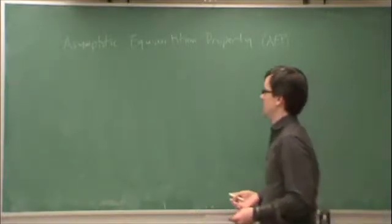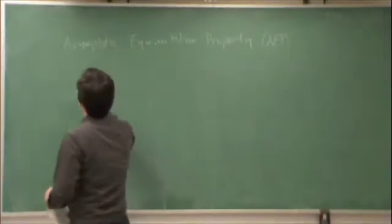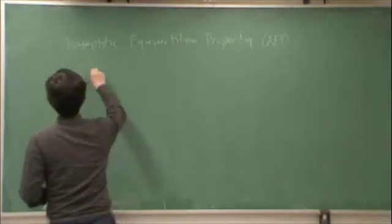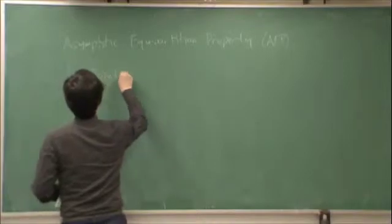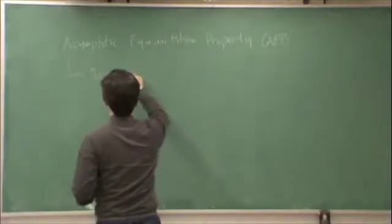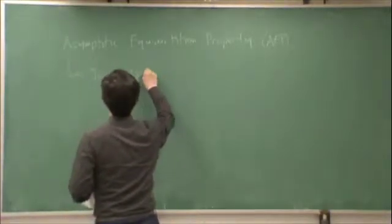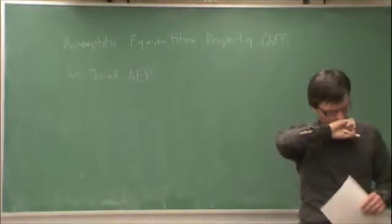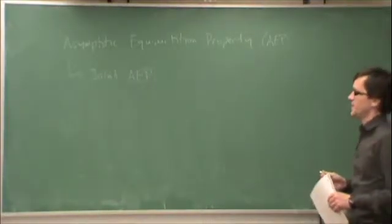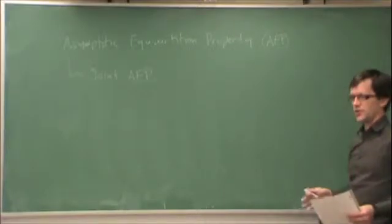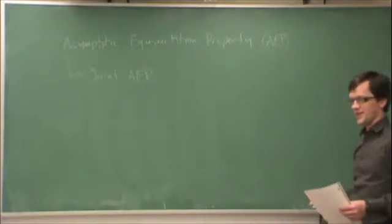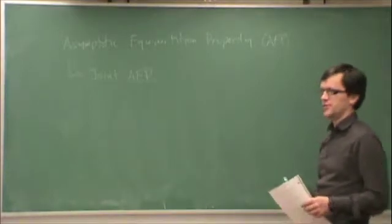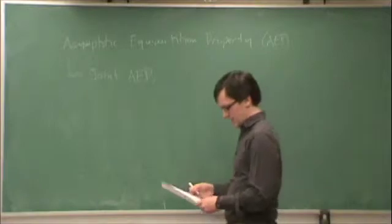What we're going to talk about right now is an extension of that to channels, and what we need is what's called a joint asymptotic EQ partition property. In other words, asymptotic EQ partition as it pertains jointly to transmissions and noisy receptions as opposed to just the outputs of a source.